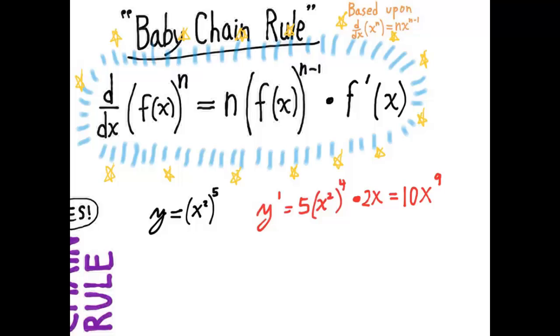So now let's look at an example where you cannot do it without the baby chain rule, an example involving the sine function. So suppose we have y equals sine squared of x.